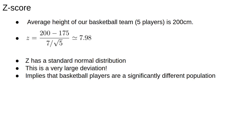Let's do a simple example of hypothesis testing with z-scores. Say we measure the average height of a basketball team of five players to be 200 centimeters. Then, using the UK mean and variance from before, z equals 200 minus 175 divided by 7 over the square root of 5, which is about 8.